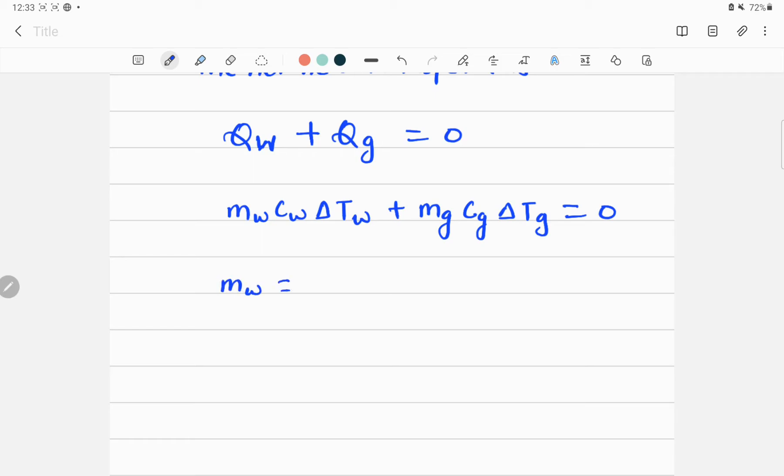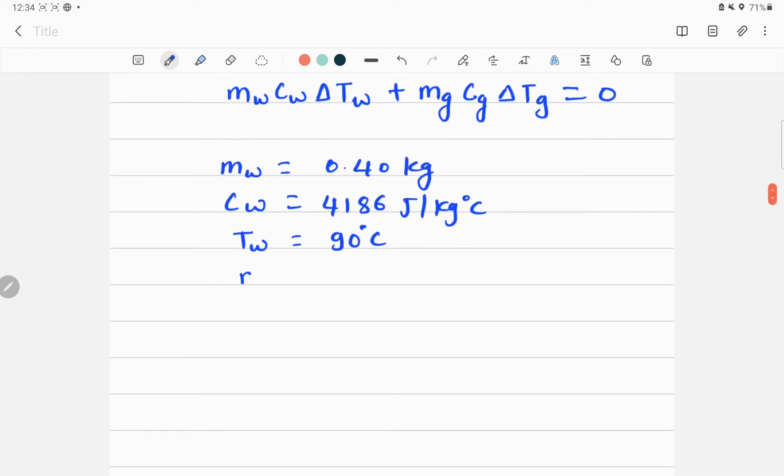So we have given mass of water which was 0.40 kilogram, and also we know specific heat capacity of water denoted by cw is 4186 joule per kilogram degree Celsius, and temperature of water is given which is 90 degrees Celsius.